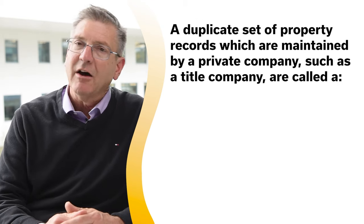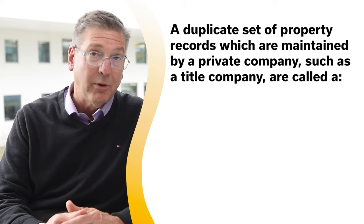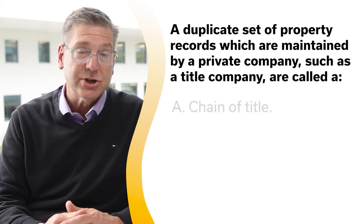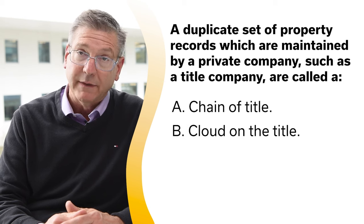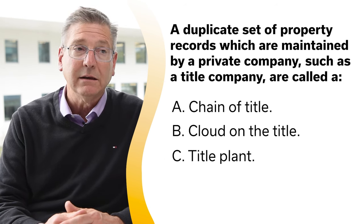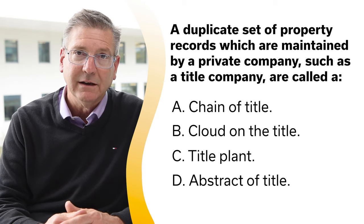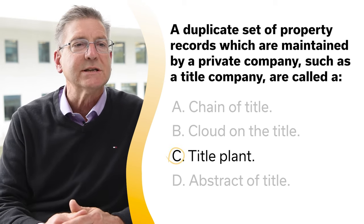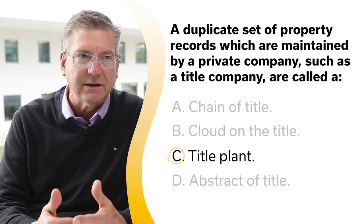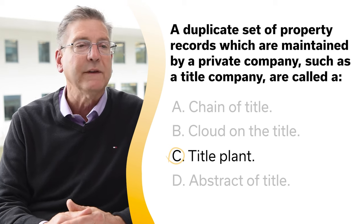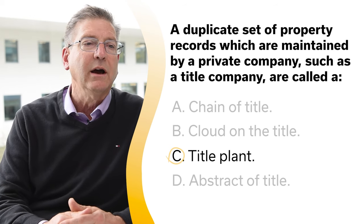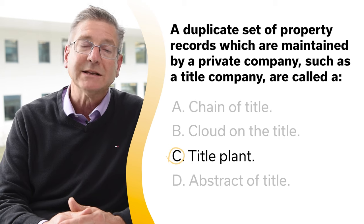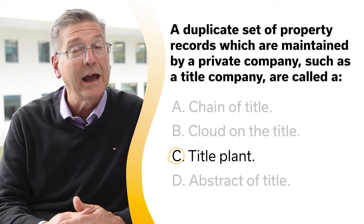A duplicate set of property records maintained by a private company such as a title company are called: A, chain of title; B, cloud on the title; C, title plant; or D, abstract of title. The correct answer is C, title plant. A chain of title shows the succession of property owners from the original grant to the present; unrecorded claims result in a cloud on the title; and an abstract of title is written chronologically of recorded owners, transfers, and encumbrances. However, a title plant is a duplicate set of property records maintained by a private company.